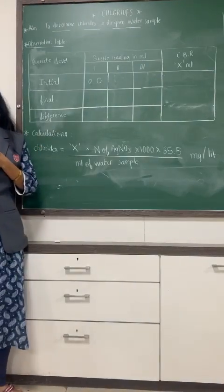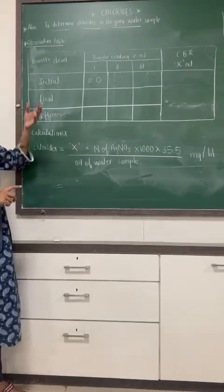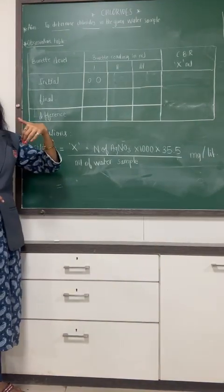You have taken 25 ml water sample in the conical flask and indicator potassium chromate. Now you have filled the burette with the AgNO3.